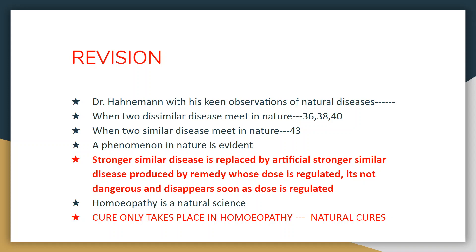He further came to the conclusion that the stronger similar disease is replaced by an artificial stronger similar disease produced by a remedy whose dose is regulated — it is not dangerous and disappears soon as the dose is regulated. He takes that clue and tries to explain the phenomena of cure by the similimum, raising homeopathy to the level of natural science.